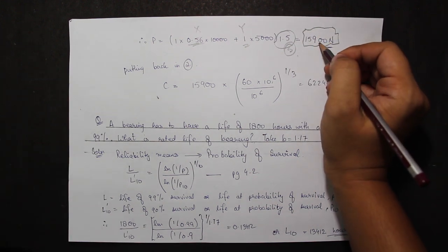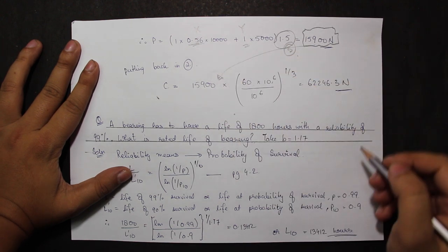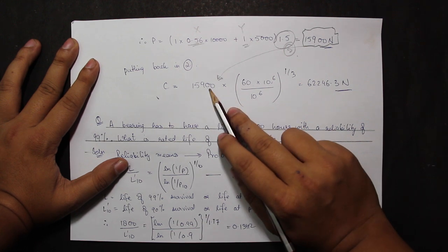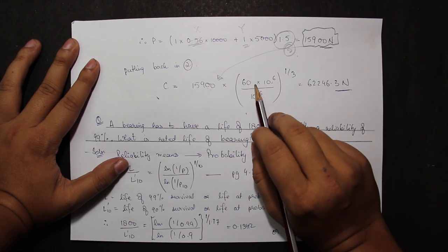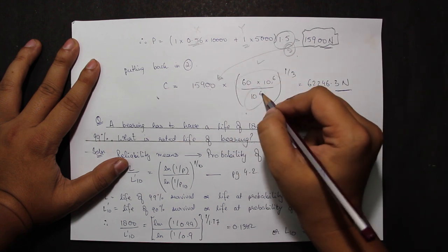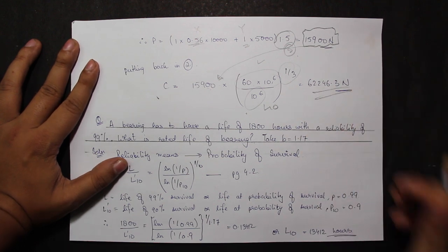Putting back the value of P in the original equation of dynamic capacity, I can find the dynamic capacity as C is equal to 15900 from here into L that I found to be 60 times 10 to the power 6 divided by 10 to the power 6 that was L10 to the power 1 by 3, which gives me 62463 N.